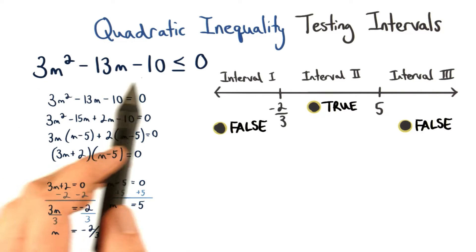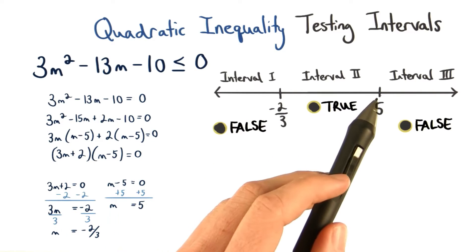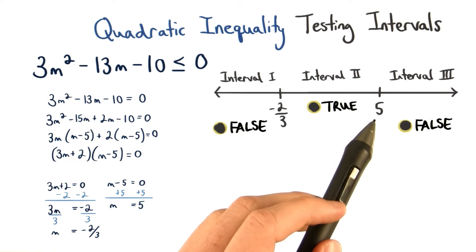The only values of m that make the inequality true are in interval 2. The numbers are between negative two-thirds and positive 5.